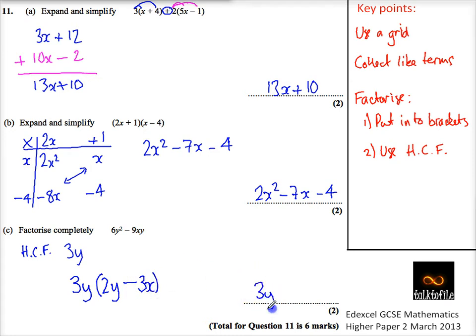So the final answer is 3y, excuse me, 3y times 2y minus 3x. If you're not sure, you can multiply this back out. So here we get 6y squared minus 9xy, and that's what we want. So we're done.